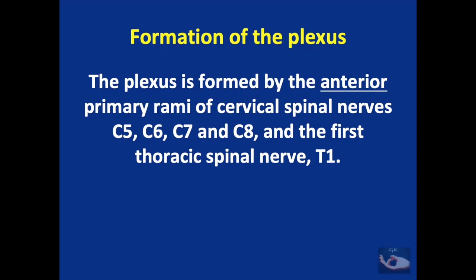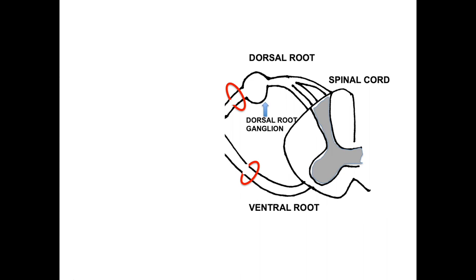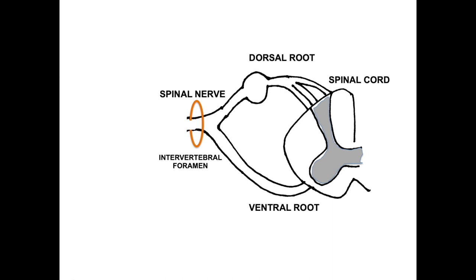The plexus is formed by the anterior primary rami of the cervical spinal nerves C5, C6, C7, C8 and the first thoracic spinal nerve T1. This is the ventral root of the spinal nerve. This is the dorsal root with the dorsal root ganglion. They join together to form the spinal nerve which exits through the intervertebral foramen.